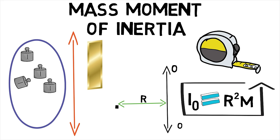As seen from the above equation, the mass moment of inertia has units of mass times length squared.